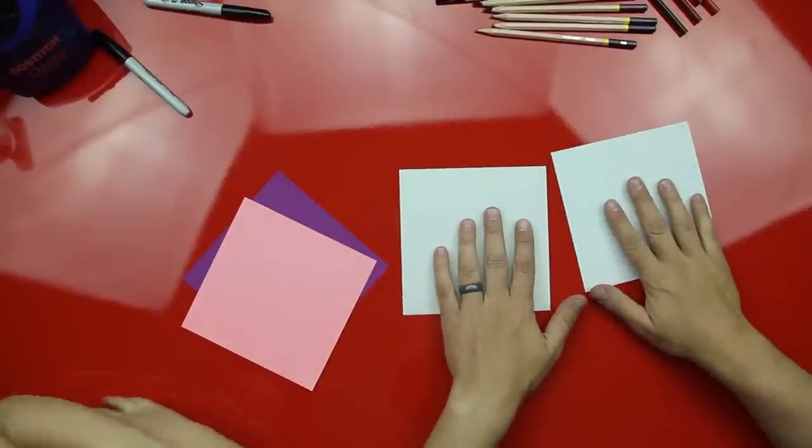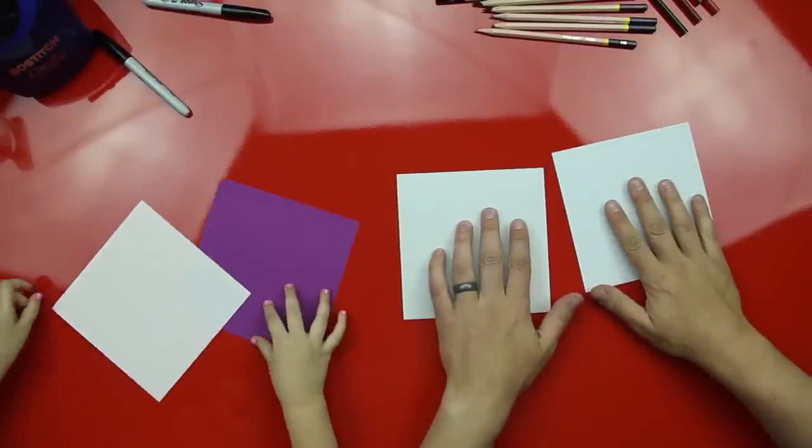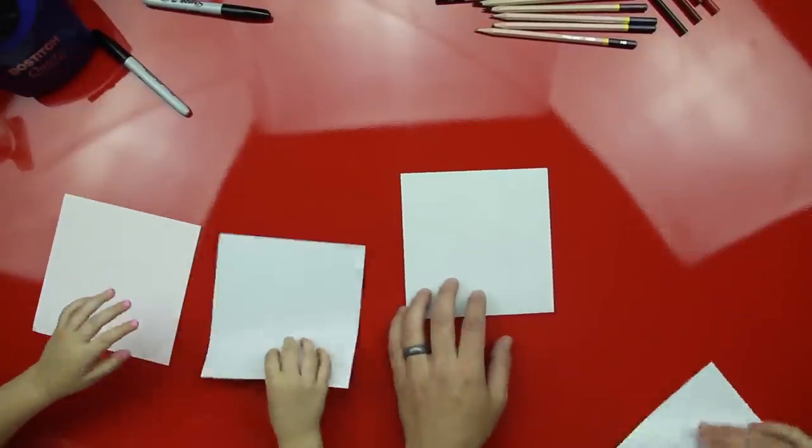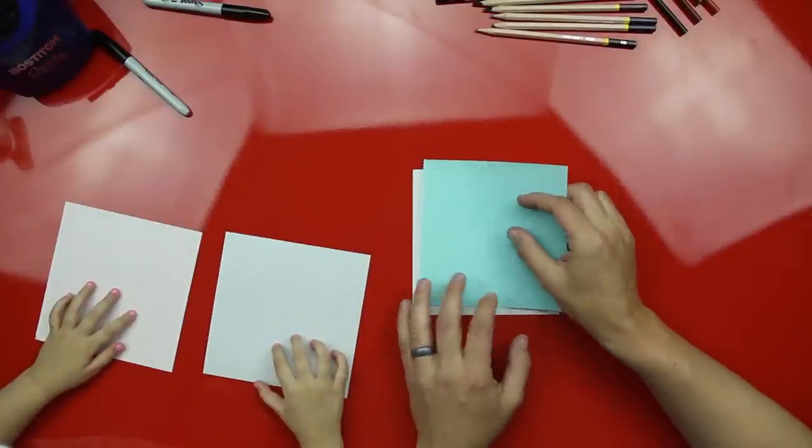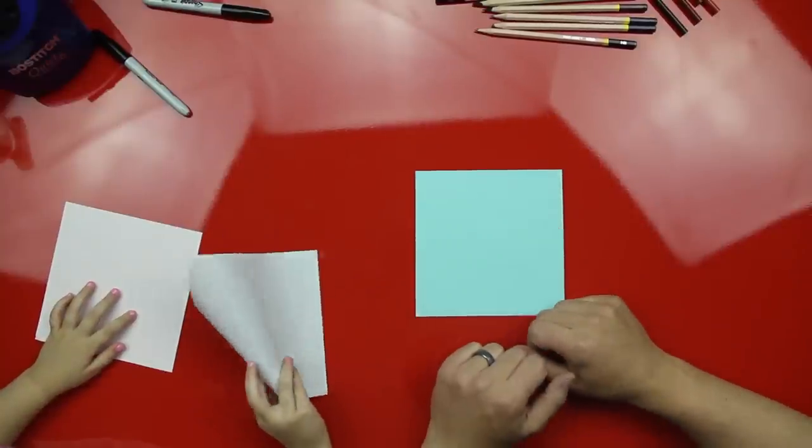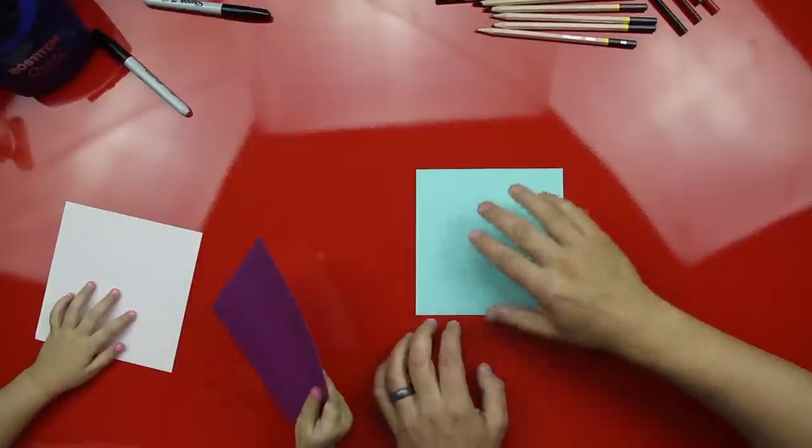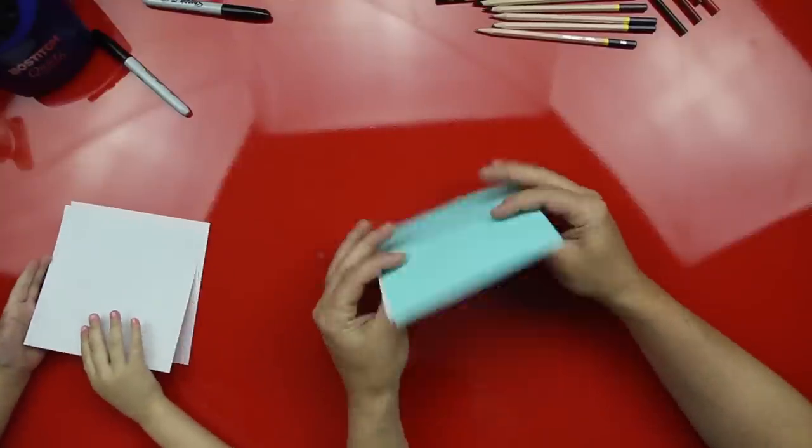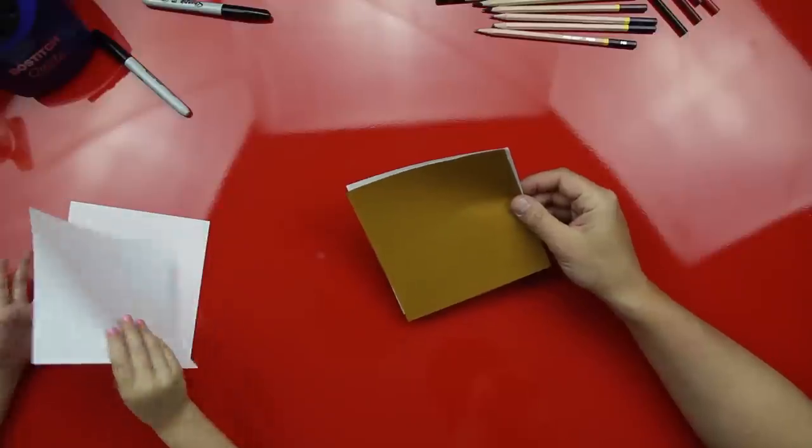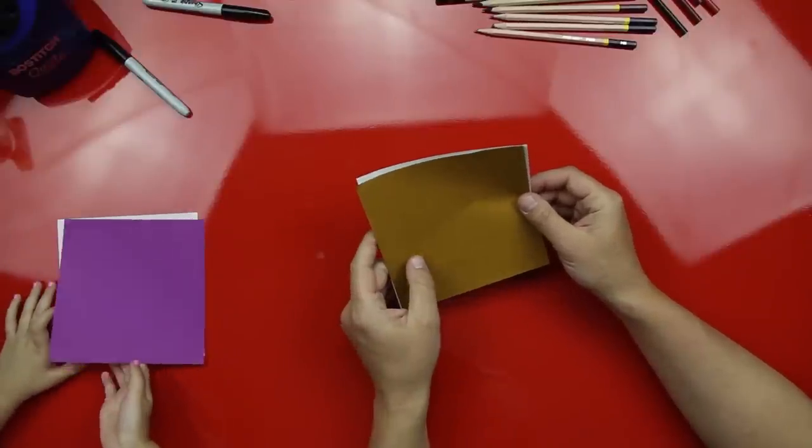So we're gonna start with our paper like this. Can you flip it over? And then we're gonna put one of them on top of the other. Okay, can you do that? So put it so that the colors are on the outside. So flip this one over. Yes, good job.